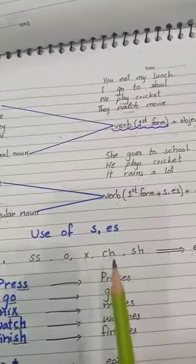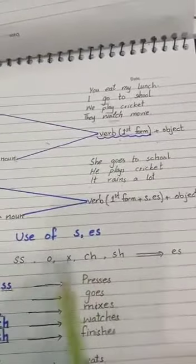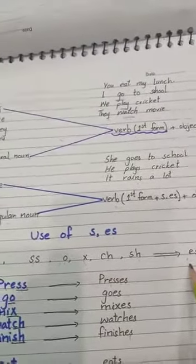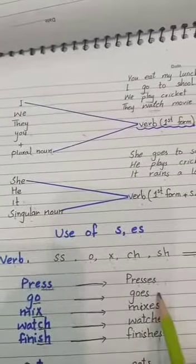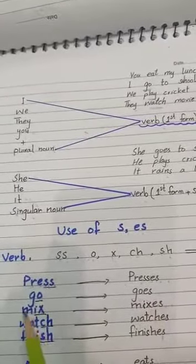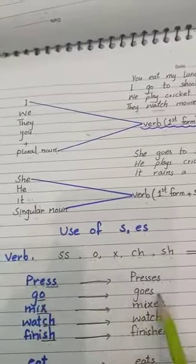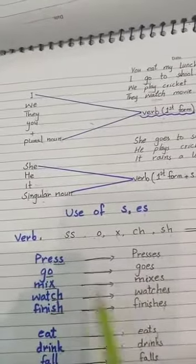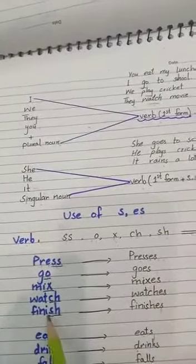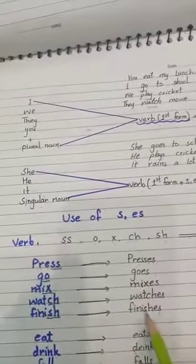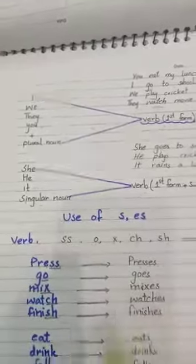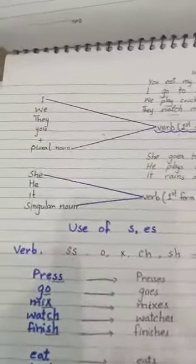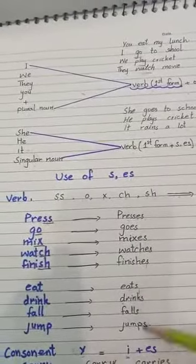Those verbs which end with double 's', 'o', 'x', 'ch', or 'sh', with them we add 'es'. Like see: 'press' - double 's', so 'presses'. 'Go' ends with 'o', so 'goes'. 'Watch' ends with 'ch', so 'watches'. 'Finish' has 'sh', so 'finishes'. 'Mix' has 'x', so 'mixes'.